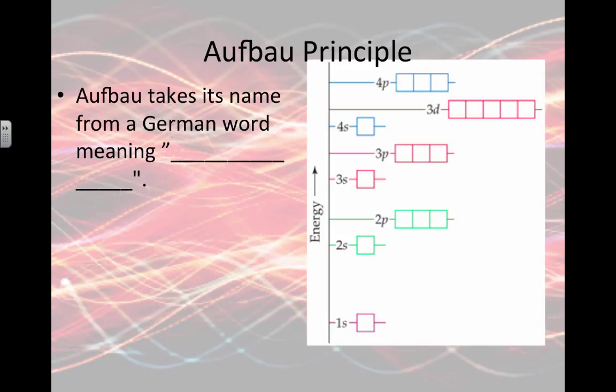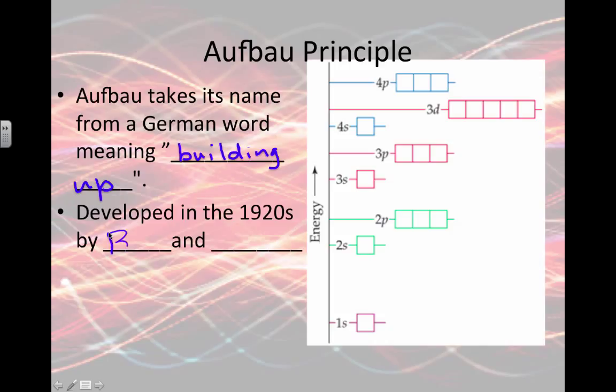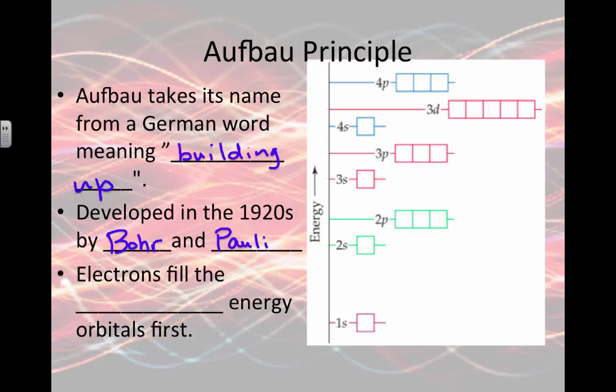Let's look at the Aufbau diagram as we talk about these rules. Aufbau means building up. That's a word in German that means to build up. This technique was developed by Niels Bohr and Wolfgang Pauli. When they were studying electrons, they noticed the electrons have to go in the lowest energy levels first. So we can call this an Aufbau diagram or an orbital diagram.